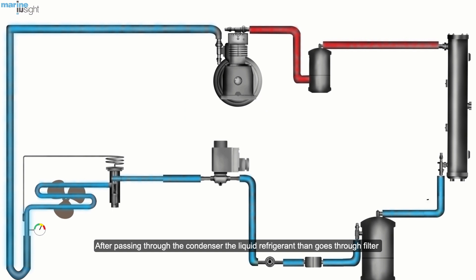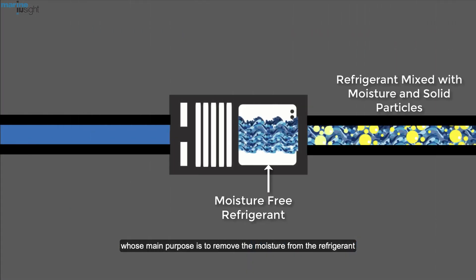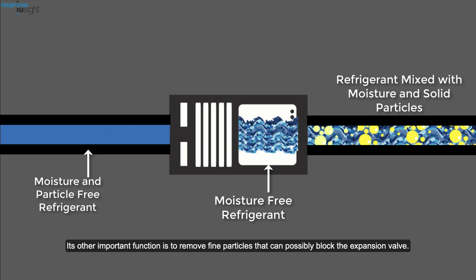After passing through the condenser, the liquid refrigerant then goes through the filter, whose main purpose is to remove the moisture from the refrigerant. Its other important function is to remove fine particles that can possibly block the expansion valve.